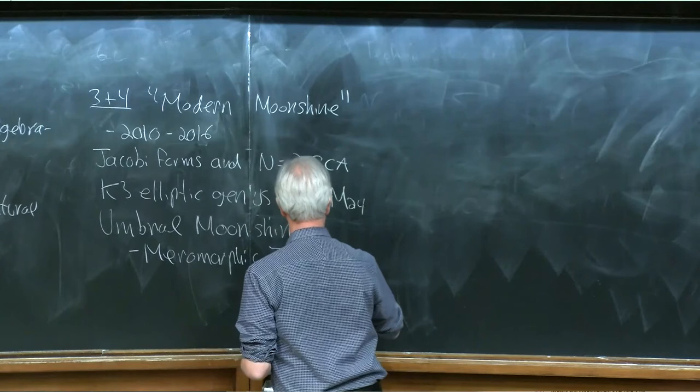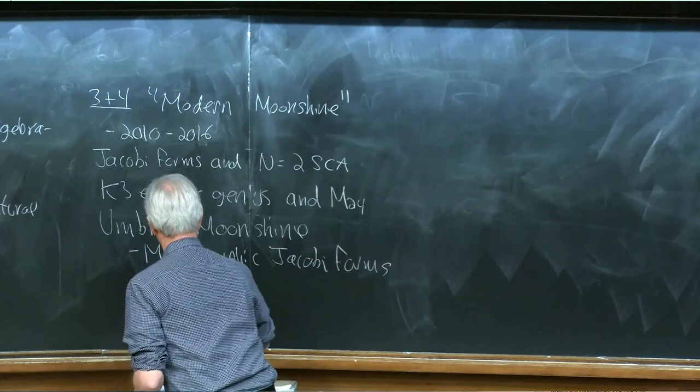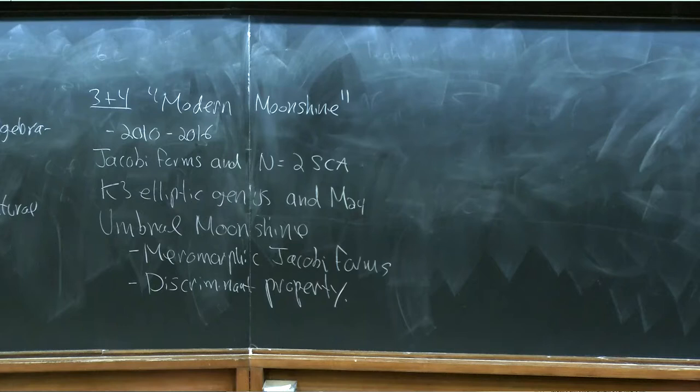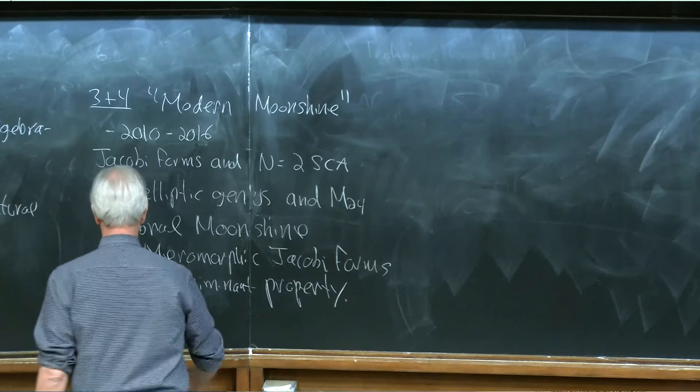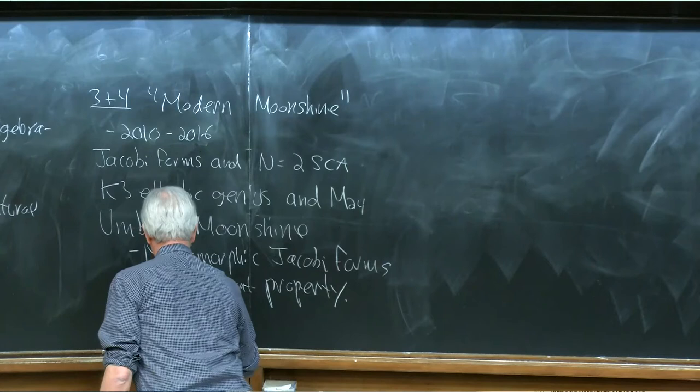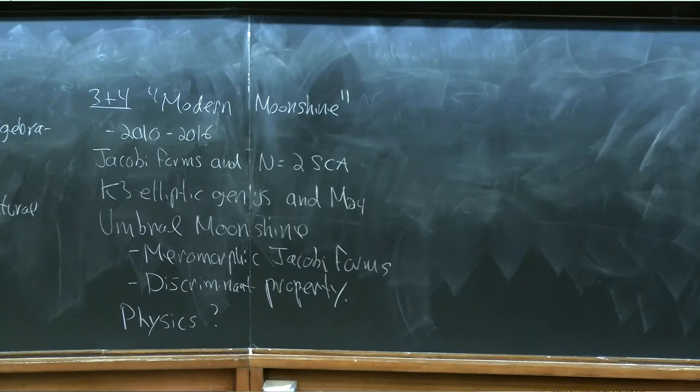A little bit about something called the discriminant property. Most of this is going to be fairly mathematical. So in the sense that the title of my talk is Moonshine in Physics, I will, towards the end and sprinkled throughout, try to talk about how this might connect to conformal field theory, string theory, ADS-CFT and things like that. But there will be a fair amount which is just mathematical.